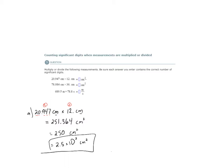Let's look at B. 78.084 centimeters times 36 centimeters. How many significant digits are in the first measurement? One, two, three, four, five. There are two in the second.